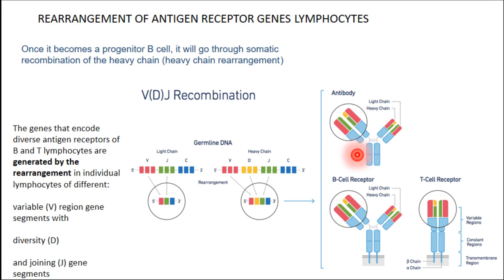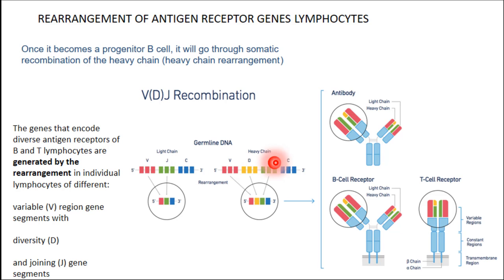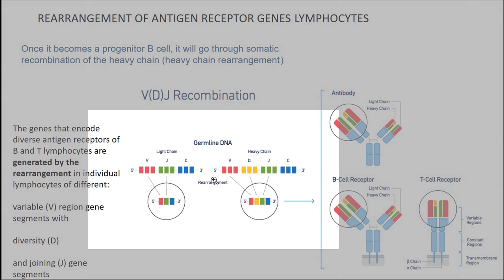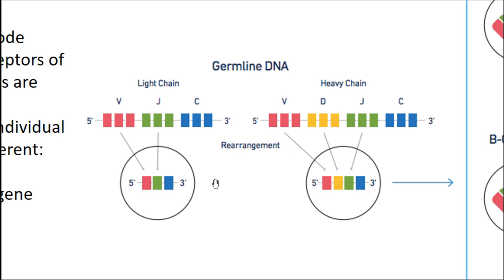An antibody — since it's a protein, it's encoded by a DNA, by a gene. The light chain is encoded by those DNA segments, and the heavy chain is encoded by those genes. They're located in the chromosomes of our cells. Now, there are two parts for the light and the heavy chain: a variable region and a constant region. The constant region is encoded by C, either in the heavy or the light chain.